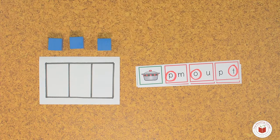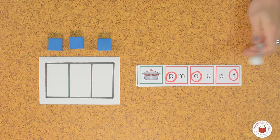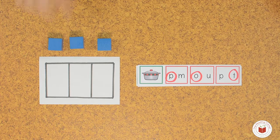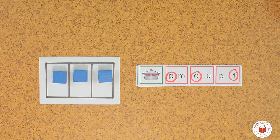Move the squares down to represent the sounds you hear in the word pot. P-o-t. Pot.